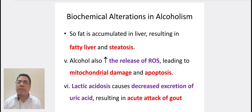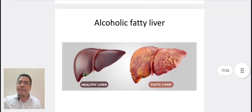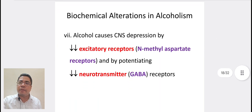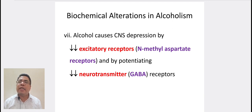Alcohol also increases the release of reactive oxygen species, leading to mitochondrial damage and apoptosis. Lactic acidosis causes decreased excretion of uric acid, resulting in an acute attack of gout. In the diagram, we can see healthy liver as compared to fatty liver. Alcohol causes CNS depression by decreased excitatory receptors, i.e. N-methyl aspartate receptors, and by potentiating the inhibitory neurotransmitter, i.e. GABA receptors.